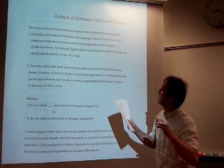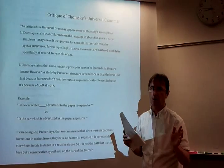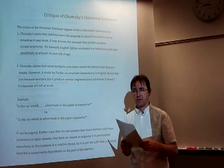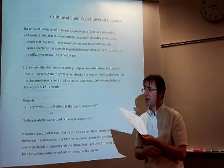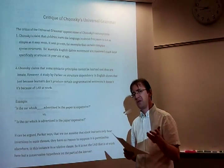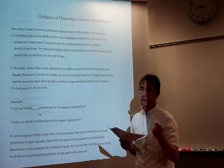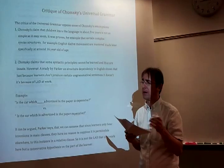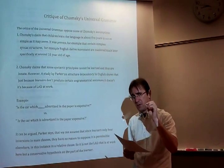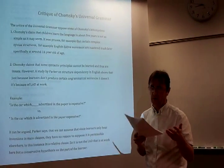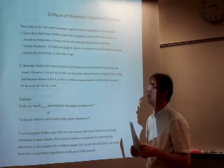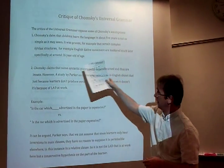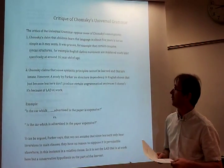Despite the fact that Chomsky's Universal Grammar has been extremely popular and influential, there have been some criticisms. Some researchers pointed out that it is not really true that we learn language within our first five years of life. In fact, some difficult and complex grammatical structures are learned much later — for example, English dative movement is mastered specifically at around age sixteen.